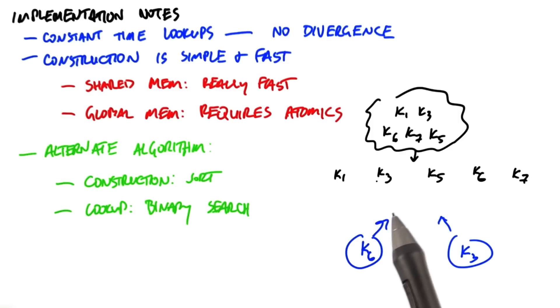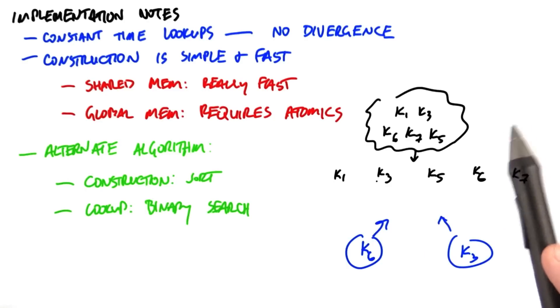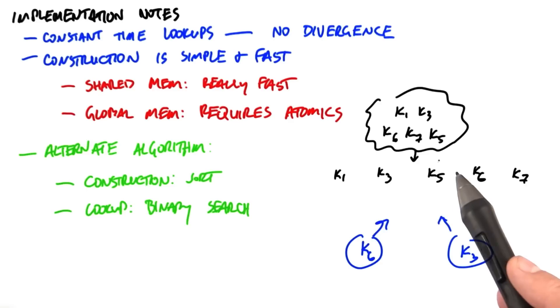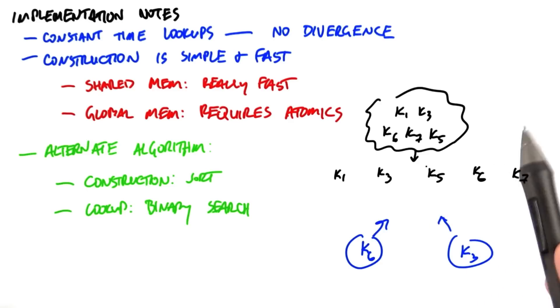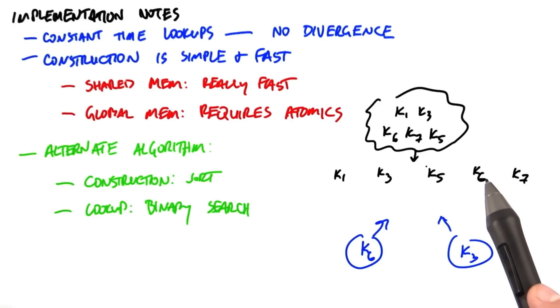Now, sorting is quite fast on GPUs. And even though hash tables are faster for this particular computation, they're not so much faster that you should never consider a sort to be a good idea. Often on the GPU, sometimes a brute force approach like sort and binary search might be your best option.